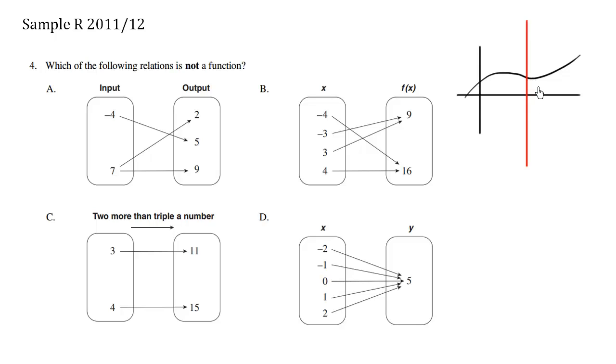So for any given x value, there must be only one possible y value. For any given input of x, there must be only one output of y.